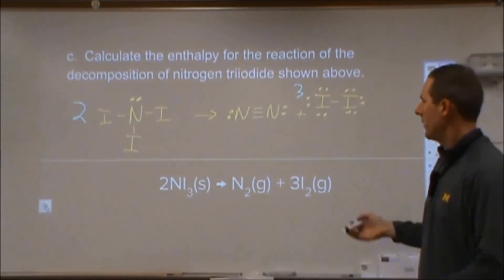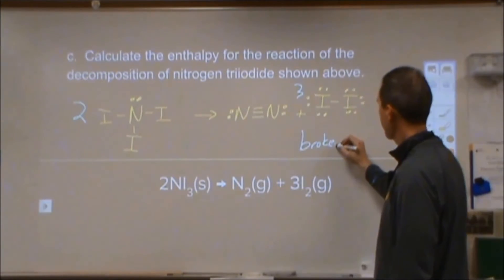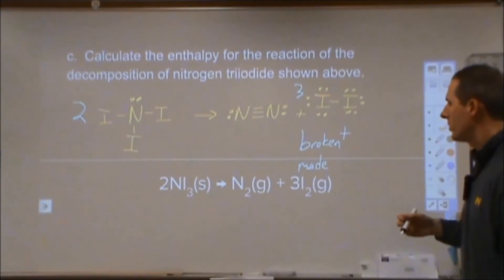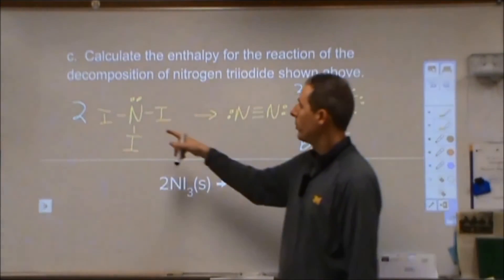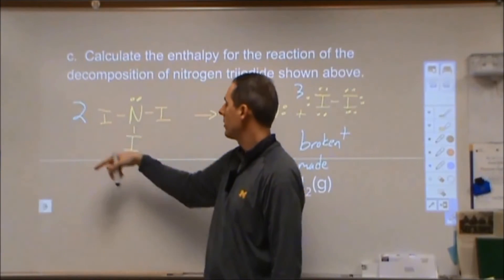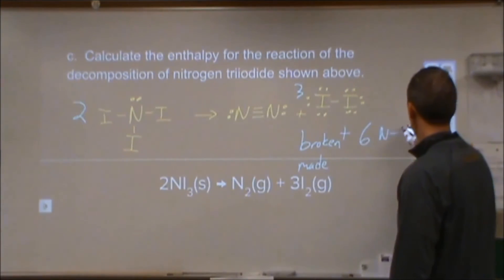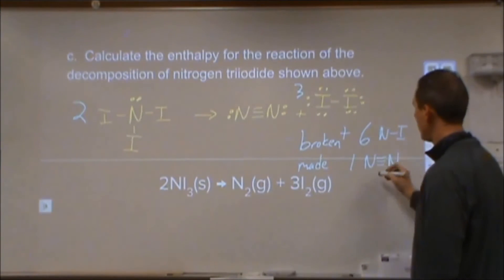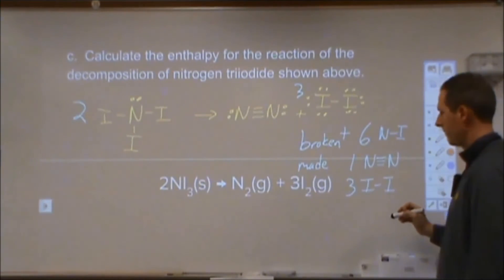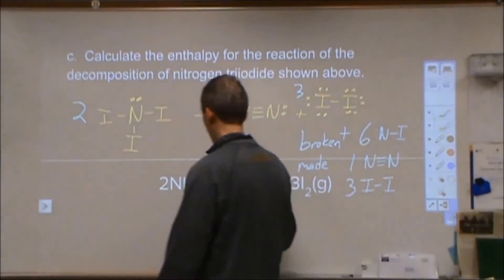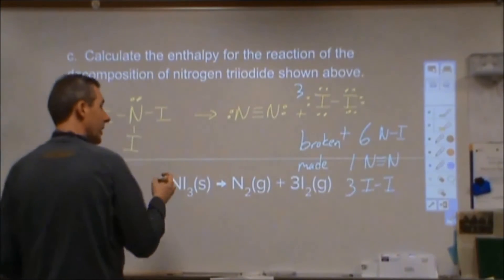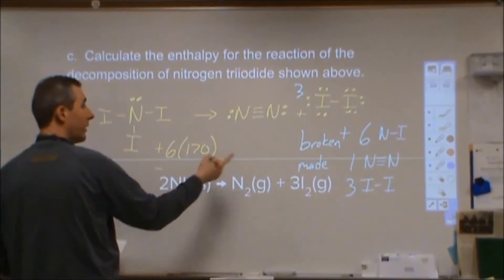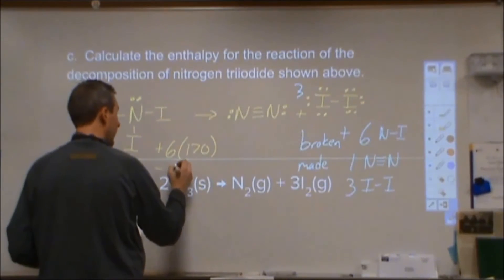We figure out every bond broken and every bond made. Bonds broken are positive energies — it requires energy to break them — and these come from the reactants. We have three N–I bonds on each molecule and two molecules, giving six N–I single bonds broken. For bonds made, we have one N≡N triple bond and three I–I single bonds. For the six N–I bonds broken: 6 × 170, which is positive. For the N≡N triple bond formed: negative 941.